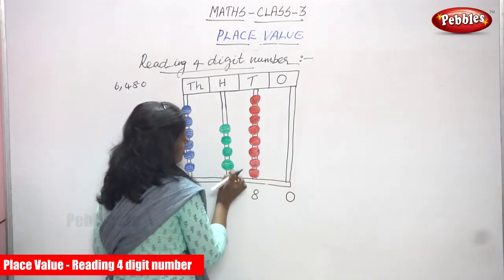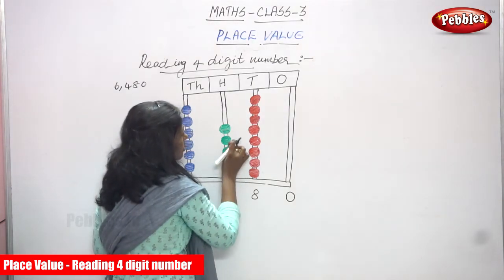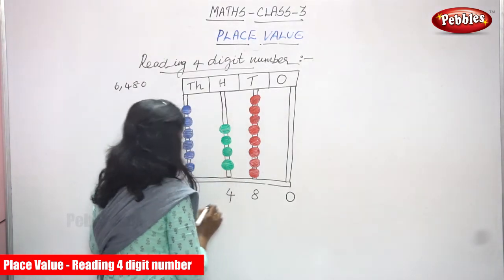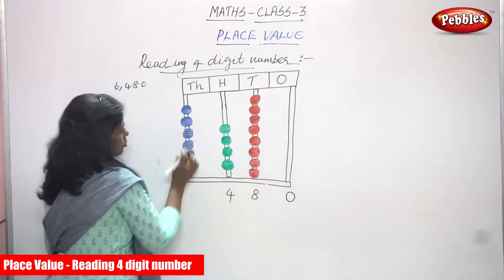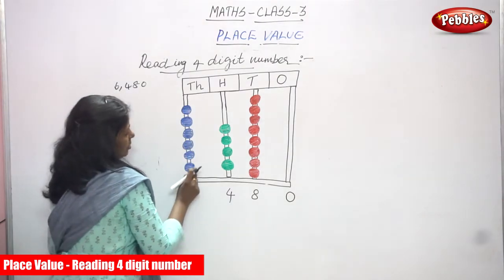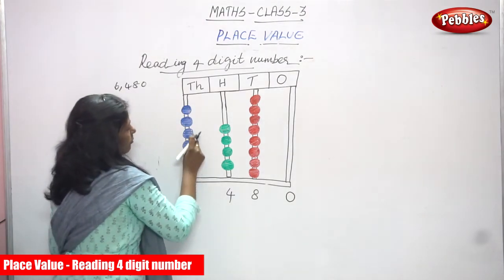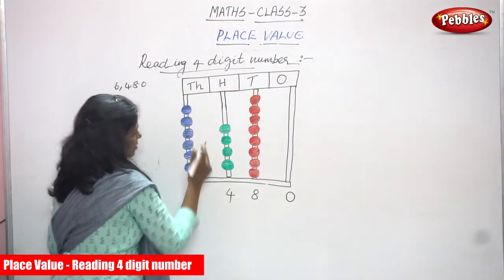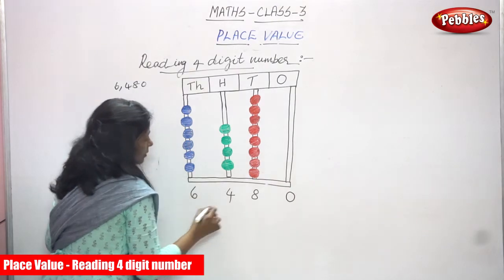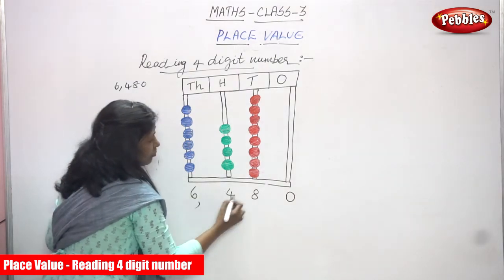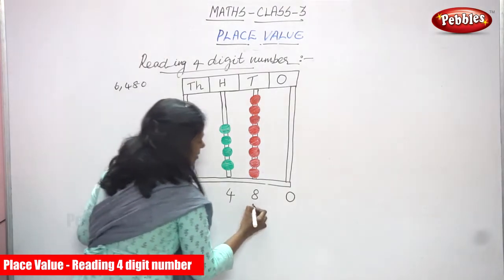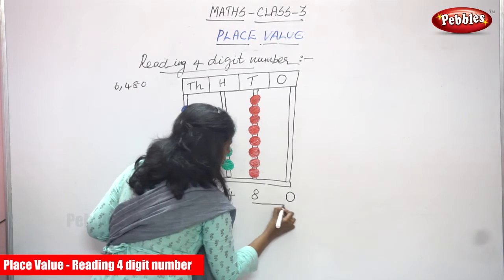In the hundreds place, how many beads are there on the abacus? One, two, three, four — that is four, so you write four. In the thousands place, how many beads? One, two, three, four, five, six. So the answer is 6480.